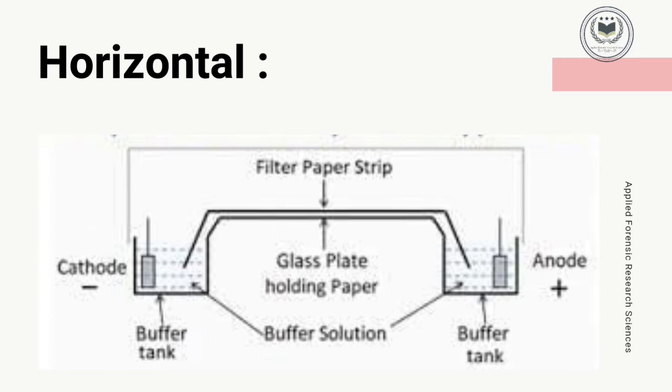As shown in the diagram, two buffer tanks are present which are connected with a glass plate holding paper. Buffer tanks are filled with buffer solution, and the cathode and anode are dipped into the buffer tanks. Both electrodes are present in opposite buffer tanks, and a filter paper strip is positioned so that its ends are dipped in the buffer tanks.